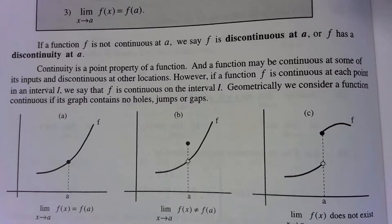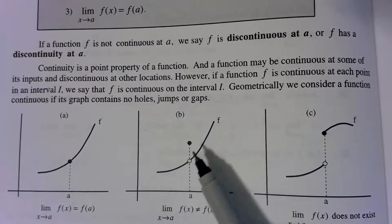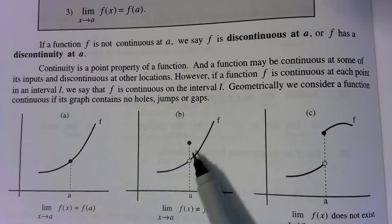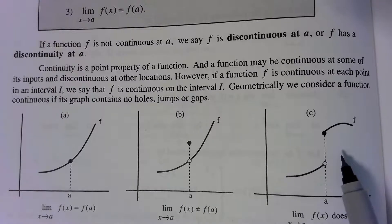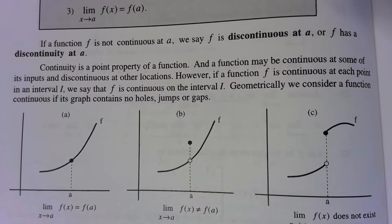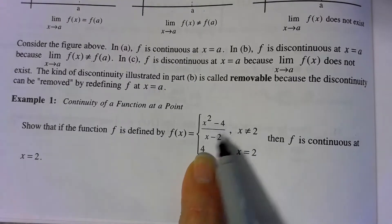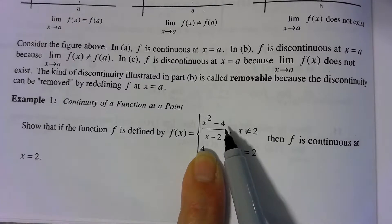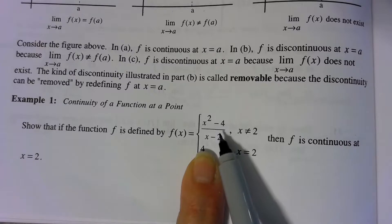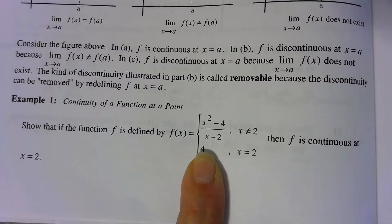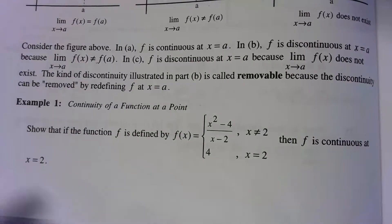This is a removable discontinuity — if I could pick up that little point and put it in the hole, it would look continuous. The other case is a non-removable discontinuity. Algebraically, you'll have some kind of rational expression — maybe a polynomial divided by a polynomial. For example, the numerator might factor to (x+2)(x-2). You could remove that discontinuity by canceling out the (x-2) factors, and then you'd just be dealing with x+2, which is no longer discontinuous.